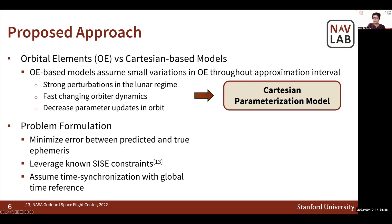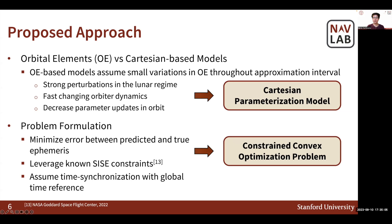The problem itself is formulated as follows. We seek to minimize the error between predicted and true ephemeris, and we leverage the known SIC constraints to ensure we design a precise representation of a true satellite state. Therefore, we design ephemeris parameterization models by solving a constrained convex optimization problem. I would also like to note that in this work we assume time synchronization with the global time reference is adopted for the satellite navigation system.